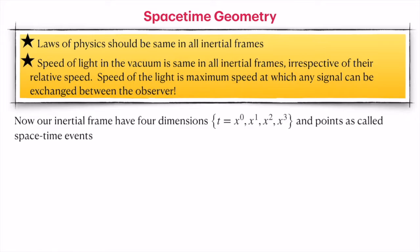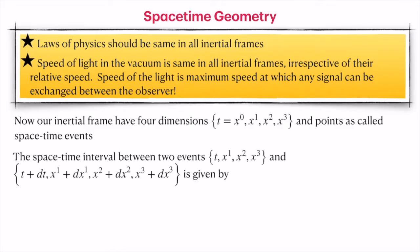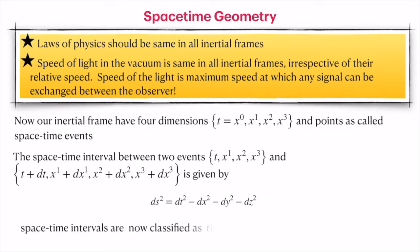Our new inertial frames are four-dimensional, or space-time. The zeroth component always refers to time in this notation, and the spatial components go 1, 2, 3, corresponding to x, y, and z directions. In generalized coordinates we can take appropriate coordinate variables, and these points are formally called space-time events. The space-time interval between two neighboring events — separated by dt, dx1, dx2, dx3 — is given by ds² = dt² − dx² − dy² − dz².